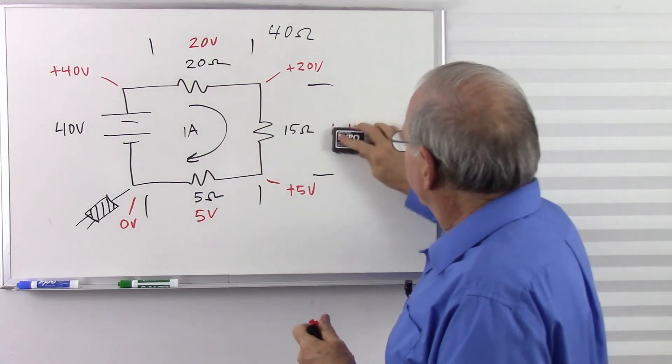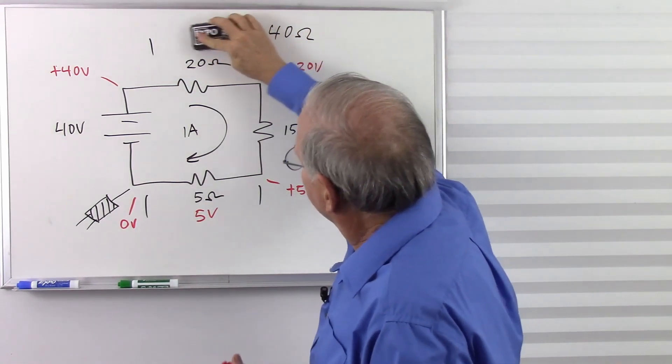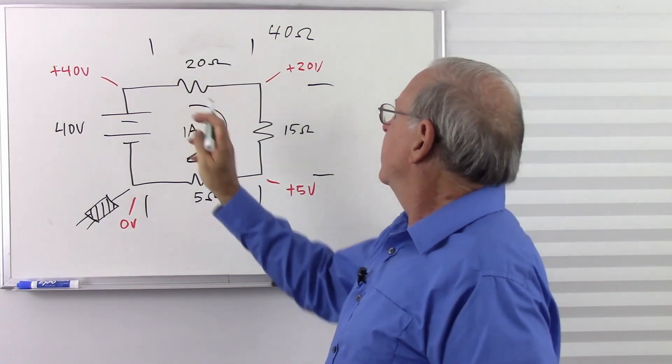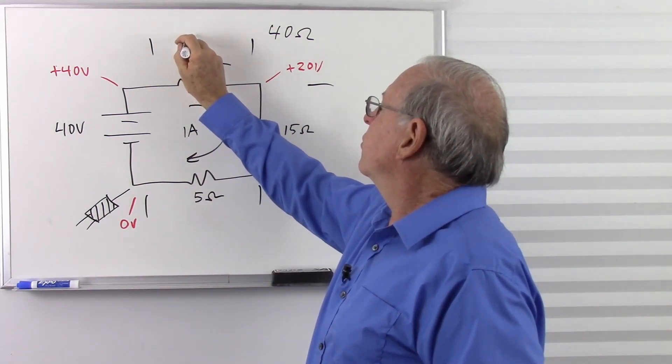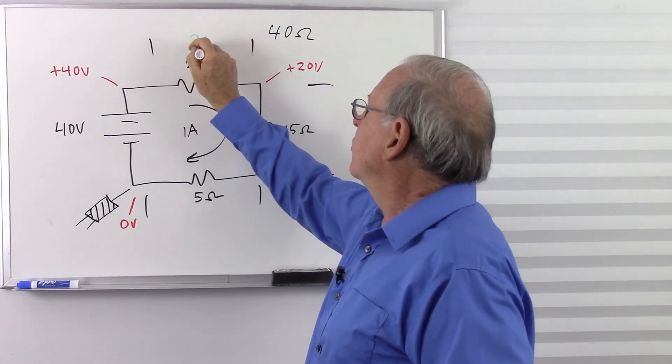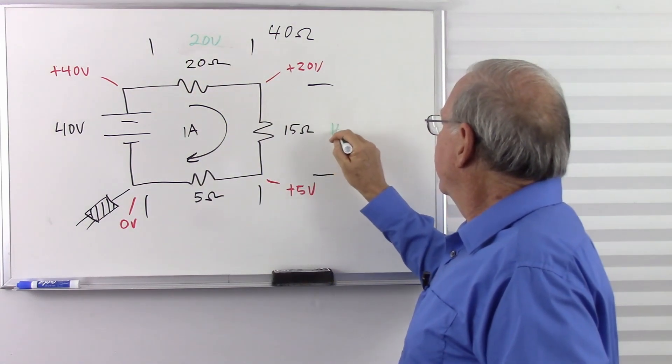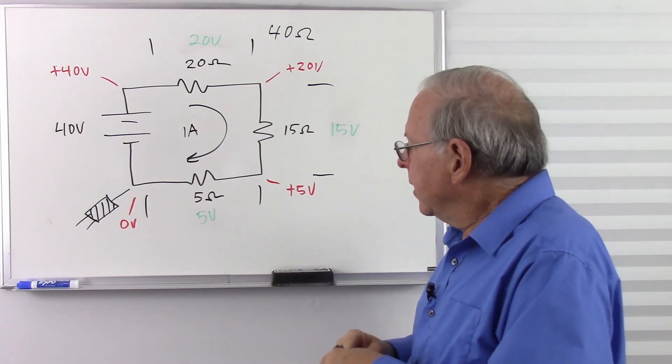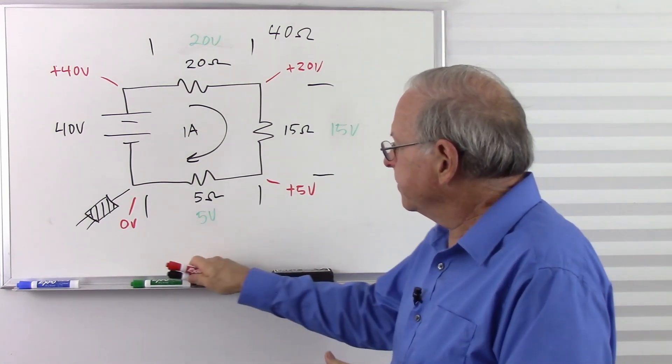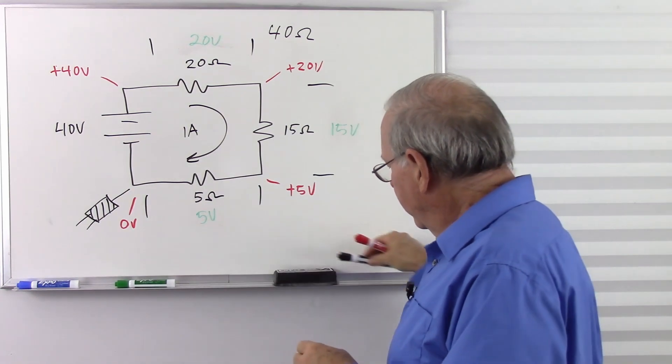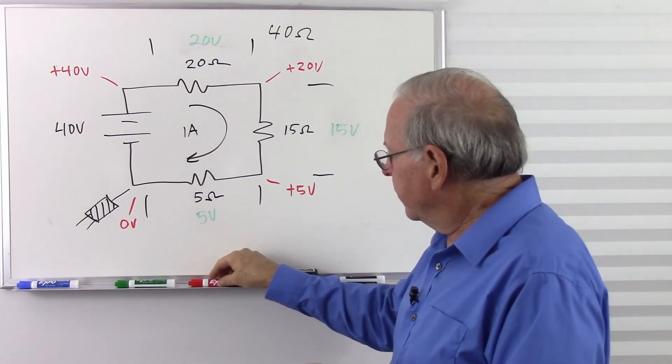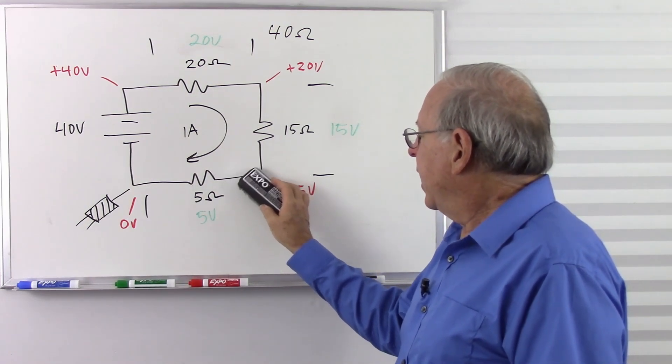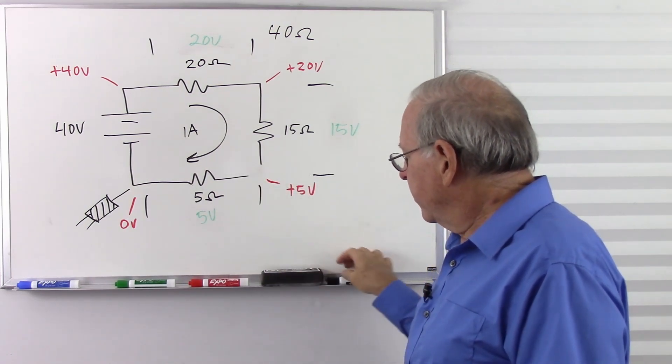Now I'm going to replace these with green because I think this is going to get confusing if I use the same color for voltage and the two different voltages. So let's go ahead, just hope you can see this, 20 volts, 15 volts, and 5 volts. Now let's see what happens if something happens and the circuit breaks right there.